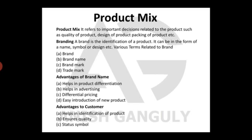A brand is the identification of a product. It can be in the form of a name, a symbol, or design. We identify most products by their brand. For example, if you see the Apple logo, we understand that is the logo of Apple company. Samsung's name is already written in their logo. It is very easy to identify a brand, and it gives quality identification.